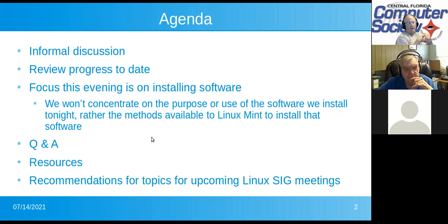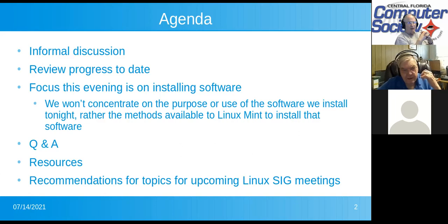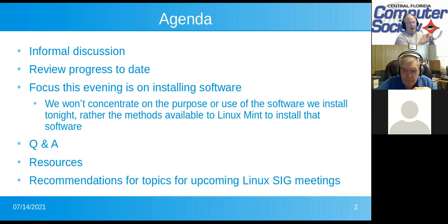Here is the agenda for tonight. We are literally in the informal discussion. When we get done with that, it will be a short synopsis of what we've done so far over the last two or three meetings. The focus this evening is going to be on installing software specifically for Linux Mint Cinnamon on this computer. We're really not going to dwell on what this software is going to be used for, but rather to look at the methods of installing software, especially when we get into something more complex than just getting it from the software manager. We'll have a little Q&A, review some resource screens, and do recommendations for upcoming Linux SIG meeting topics.